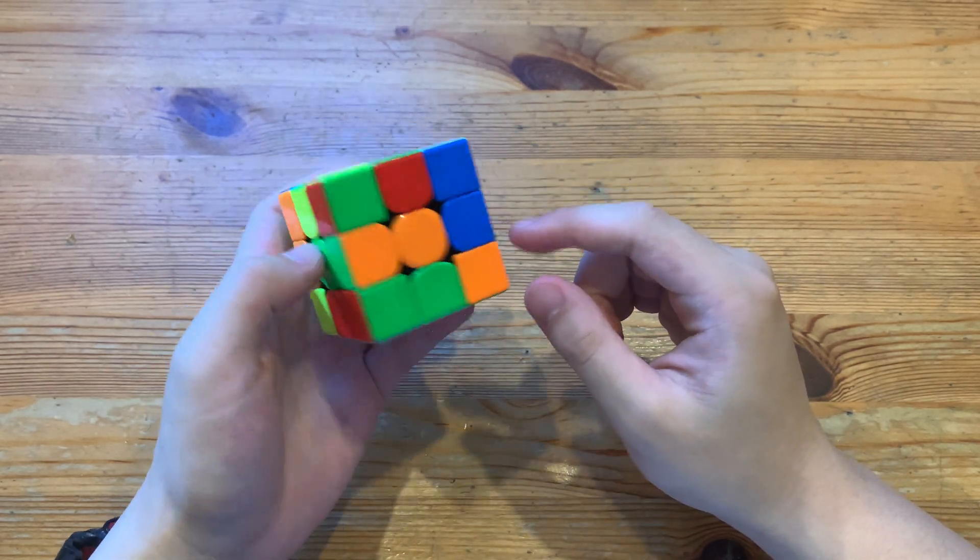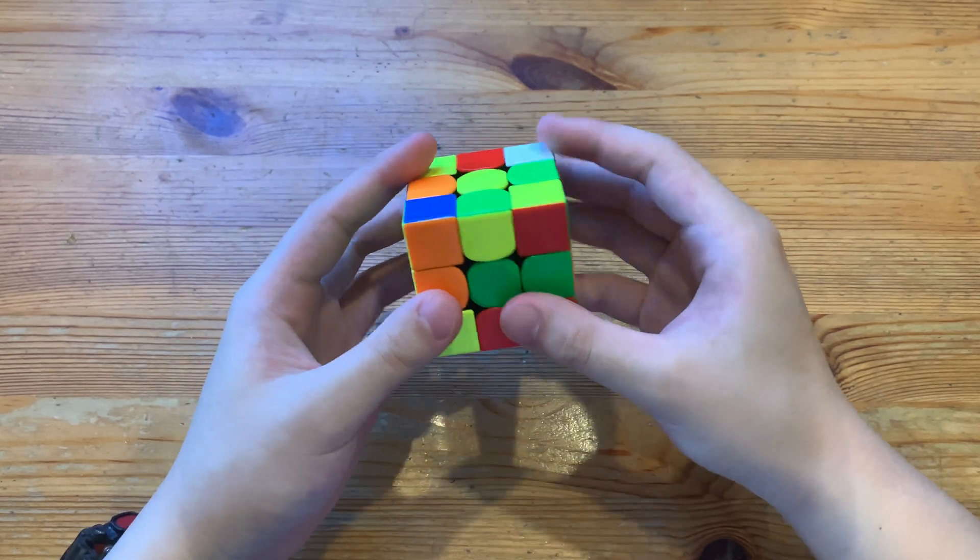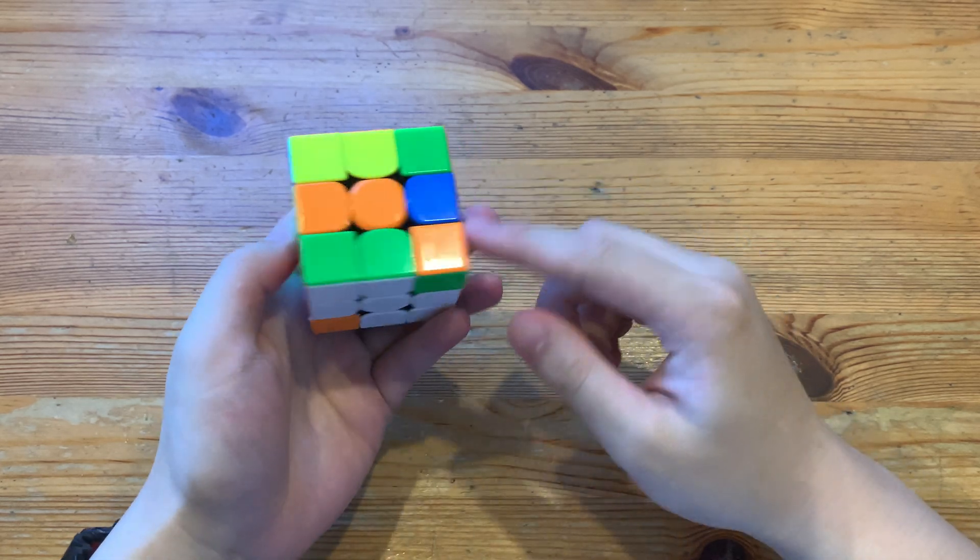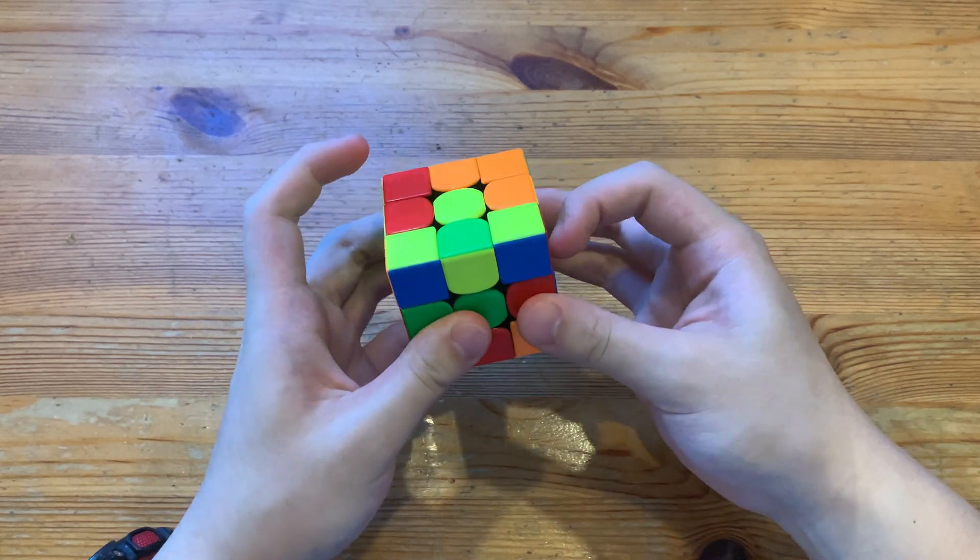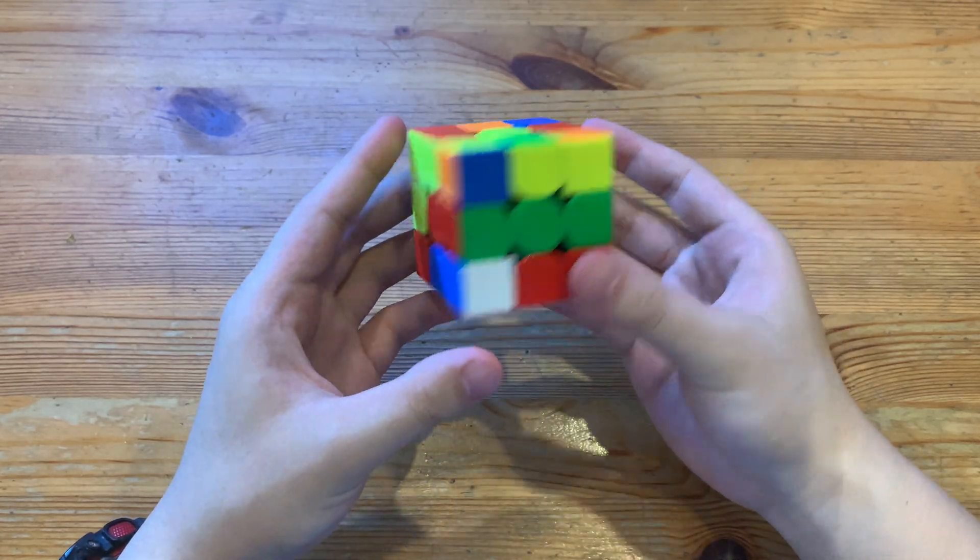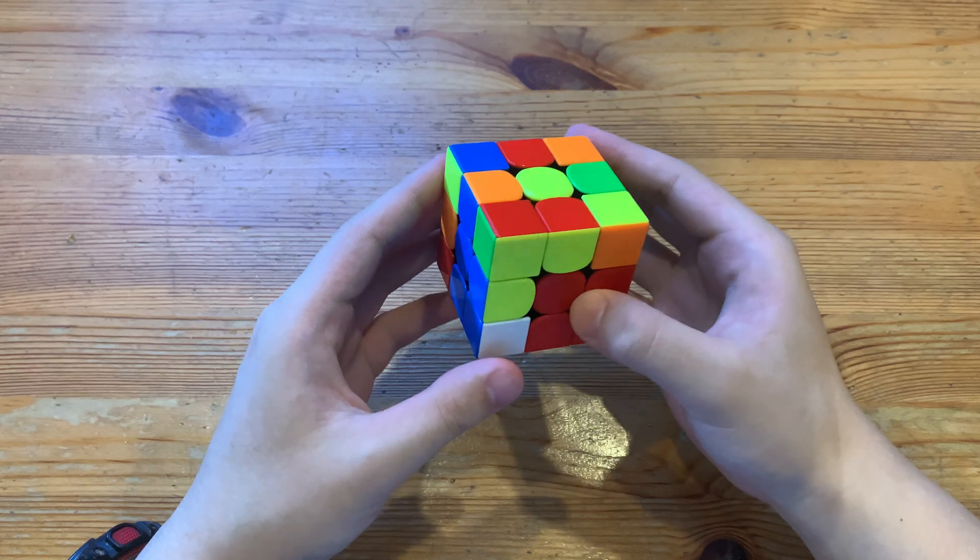And here, what I'll do is just insert this first, like that, and then insert this into the back, right slot. And then here, do a y u prime, and now I have a double x cross solved.